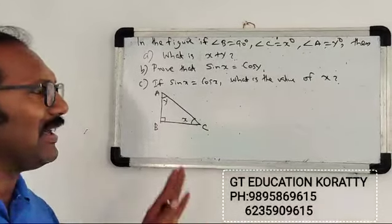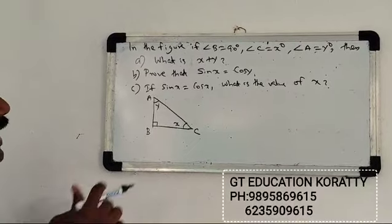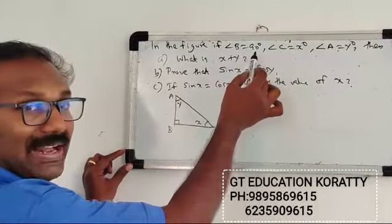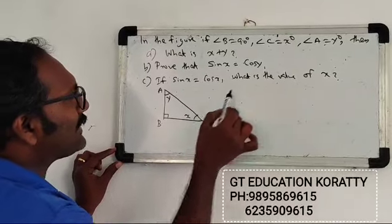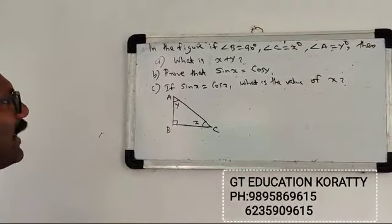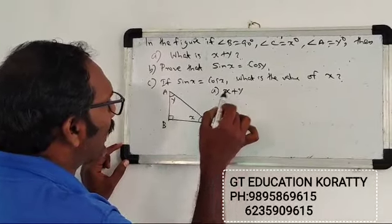It is very simple and logical. So here, the figure shows angle B is 90 degrees. Angle C equals x, angle A equals y. The first question asks, what is x plus y?